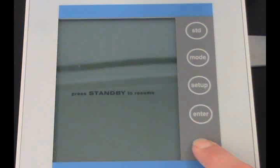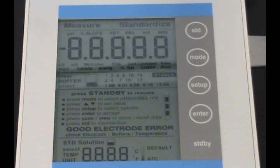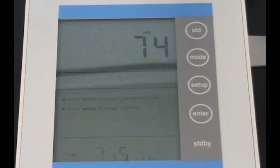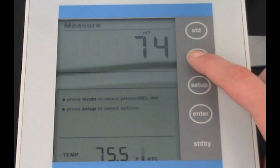Turn the meter on by pressing the standby button, located on the lower right side of the screen. Press the mode key until the display reads pH mode.